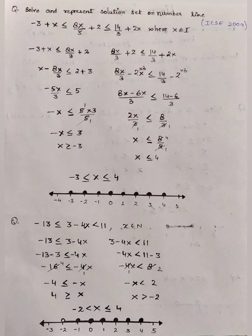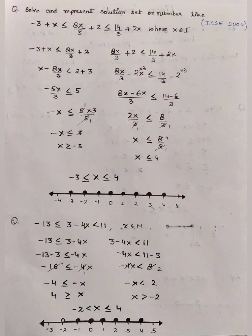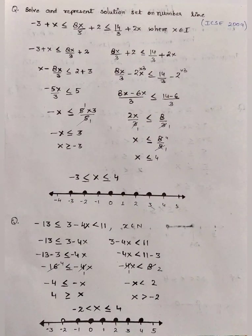Now let us solve the second inequation: 3 − 4x < 11. We transfer +3 to the other side, which gives −3, so −4x < 8. Then 4 cancels 8 twice, giving −x < 2. We transfer the minus sign from x, which also changes the symbol, giving x > −2.